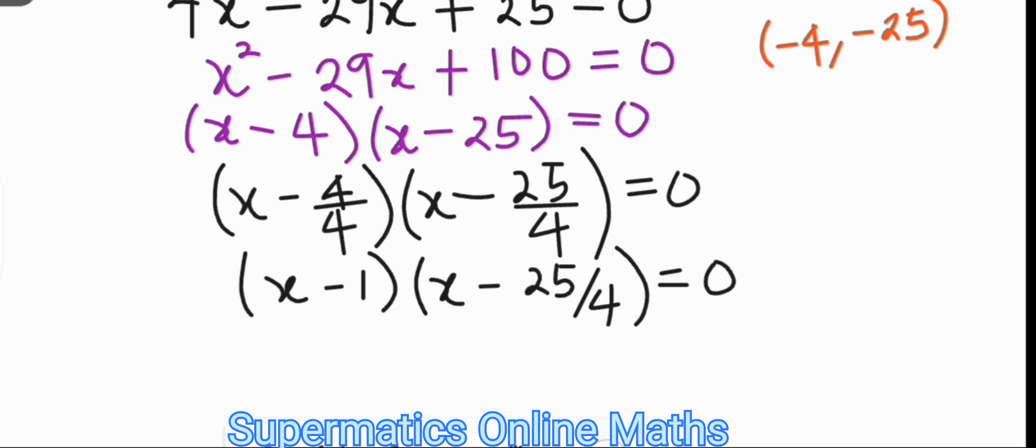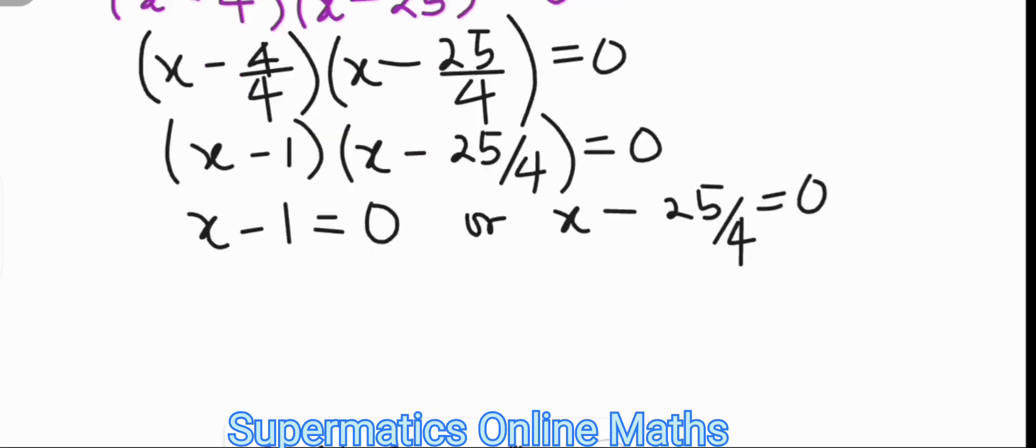And by the zero product property, x minus 1 could be 0 or x minus 25 over 4 could be 0. So finally, the values of x for which the radical equation holds true will be x equals 1 or x equals 25 over 4.